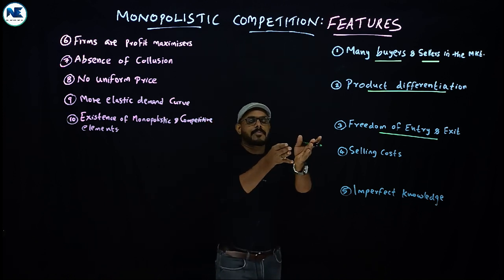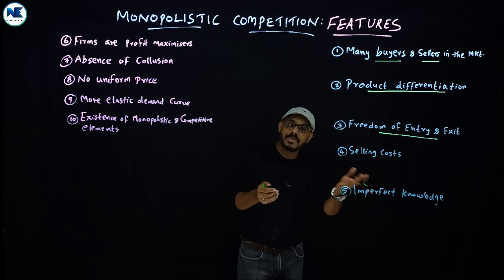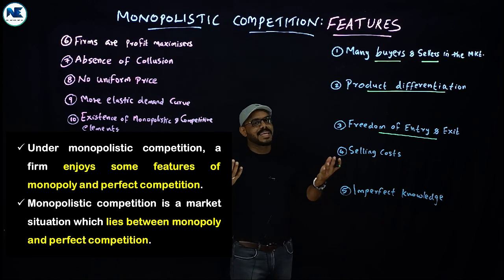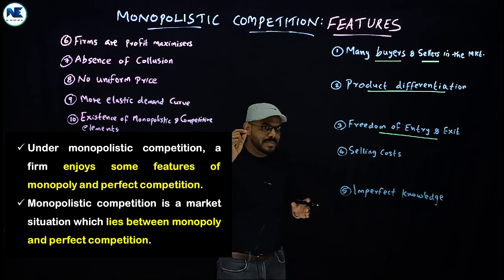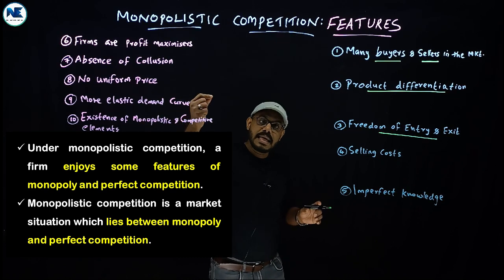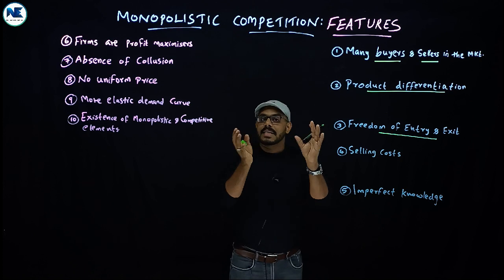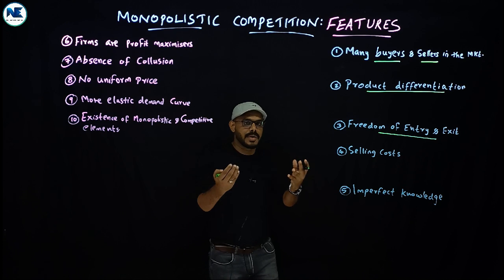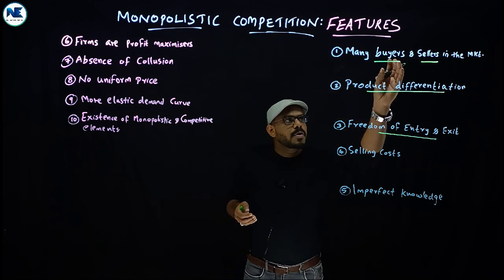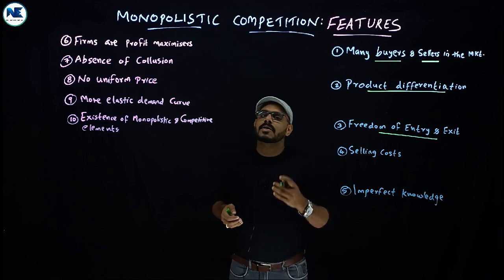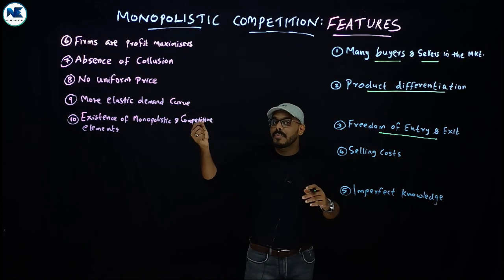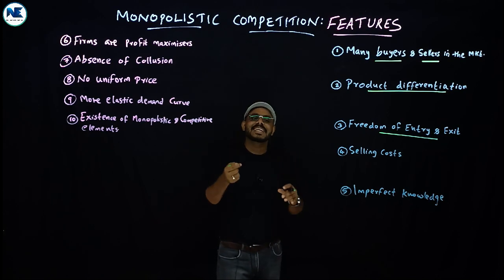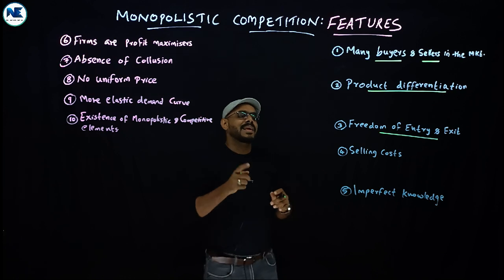Monopolistic competition takes features from both perfect competition and monopoly. We have freedom of entry and exit similar to perfect competition, but also product differentiation, brand recognition, market dominance, and barriers from existing firms. The large number of sellers is a key feature distinguishing monopolistic competition from monopoly.